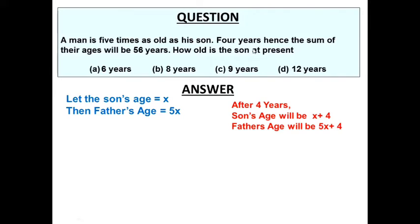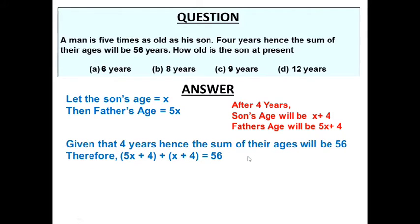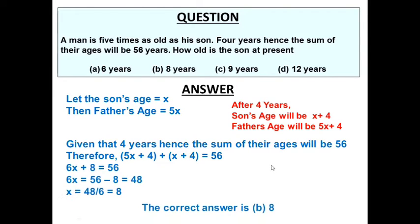The condition given is that after four years, the sum of their ages will be 56. That means when you add x plus 4 and 5x plus 4, we should get 56. So: 5x plus 4 plus x plus 4 equals 56. Solving: 6x plus 8 equals 56, so 6x equals 48, giving x equals 8. The present age of the son is 8, so the correct option is 8.